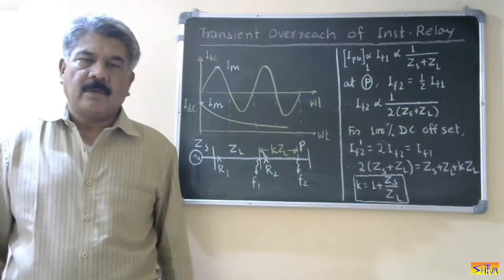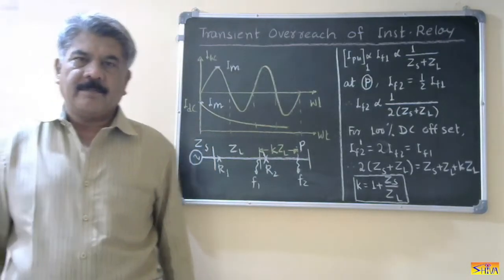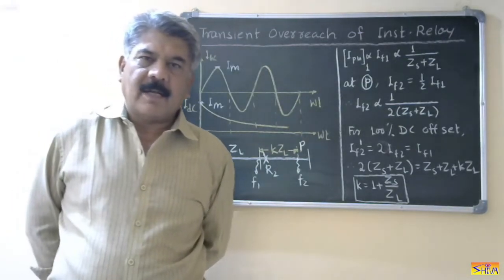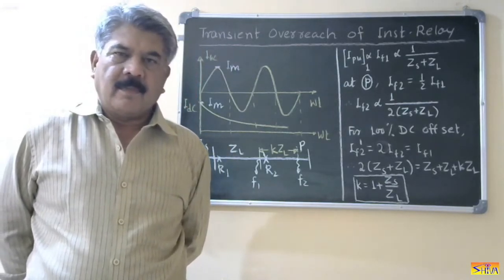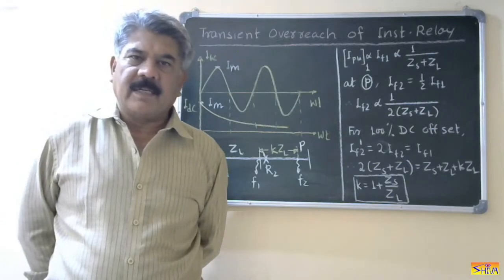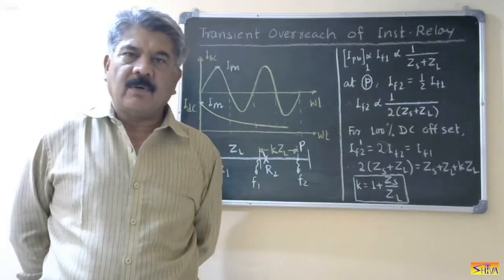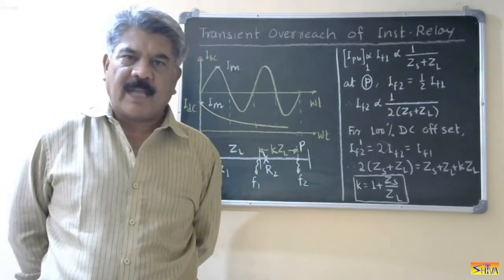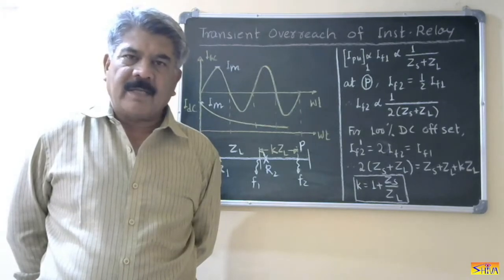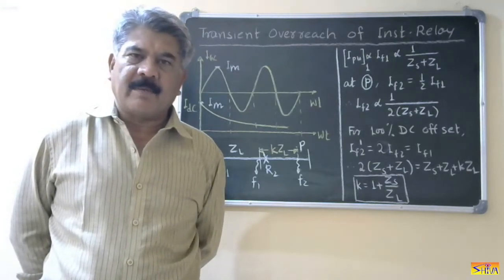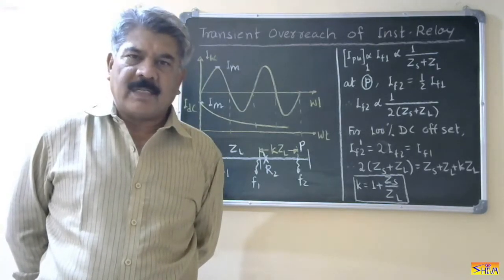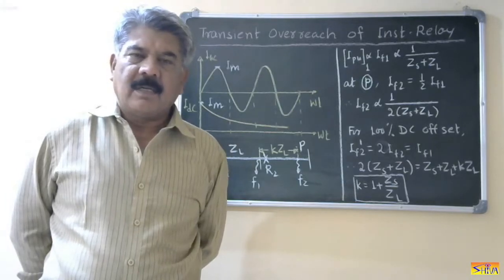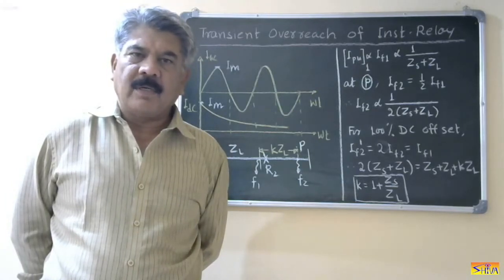Hello friends, good morning. In my last lecture I had explained about the instantaneous relay. The main advantage of instantaneous relay is it operates without any additional or purposeful time delay. But the drawback is it is most affected by the DC offset value of the fault current, and therefore it overreaches — meaning it operates for faults beyond its range.